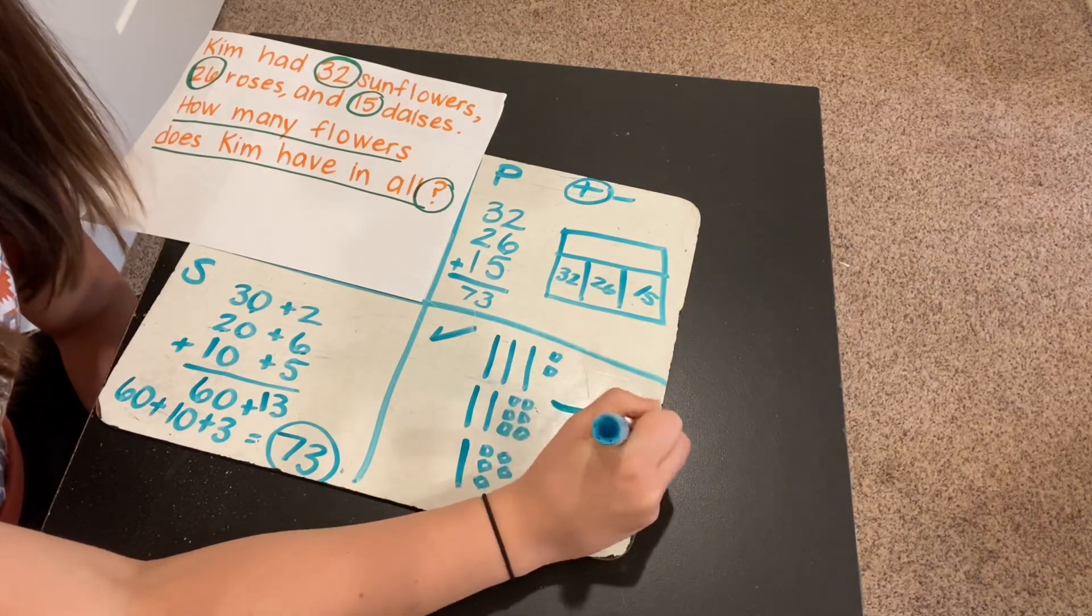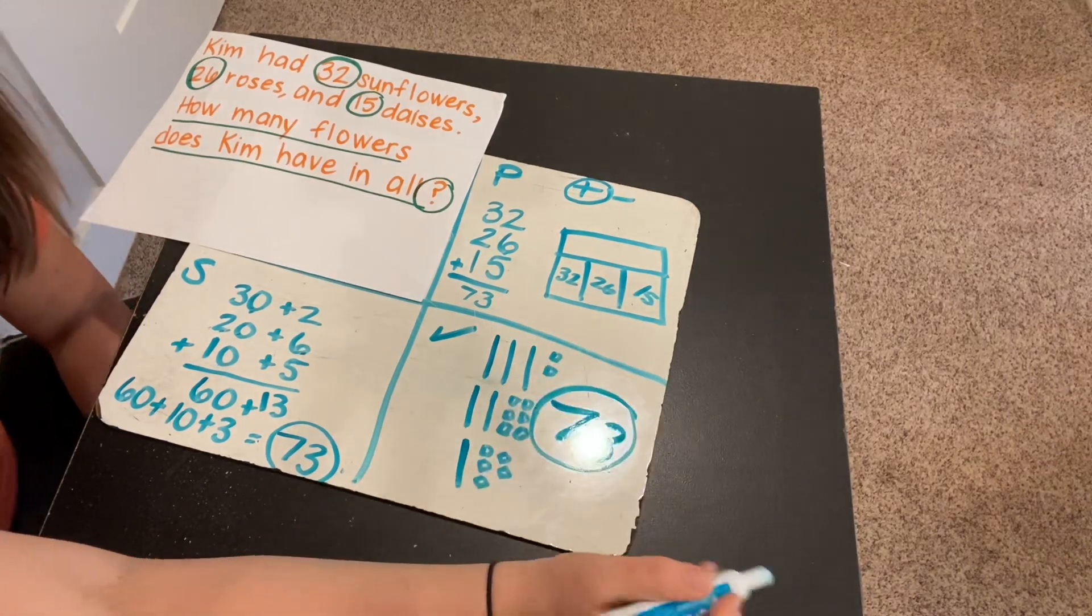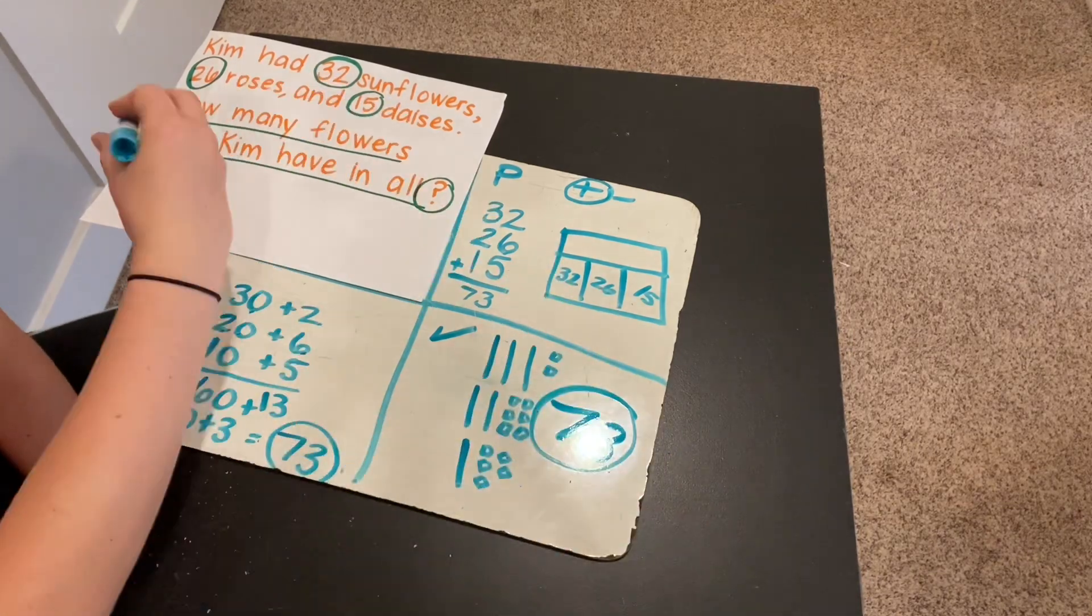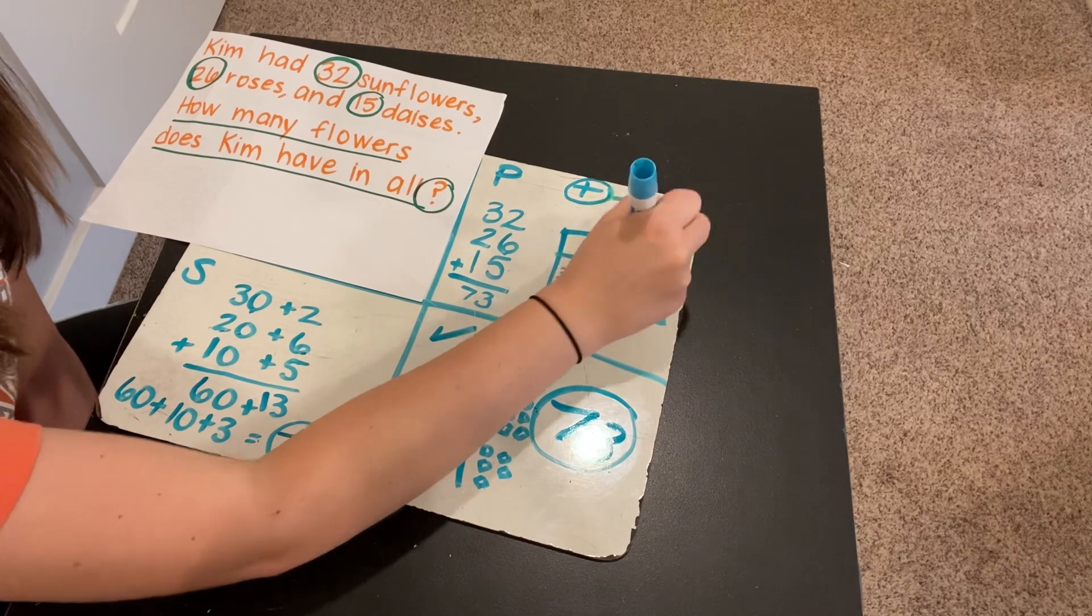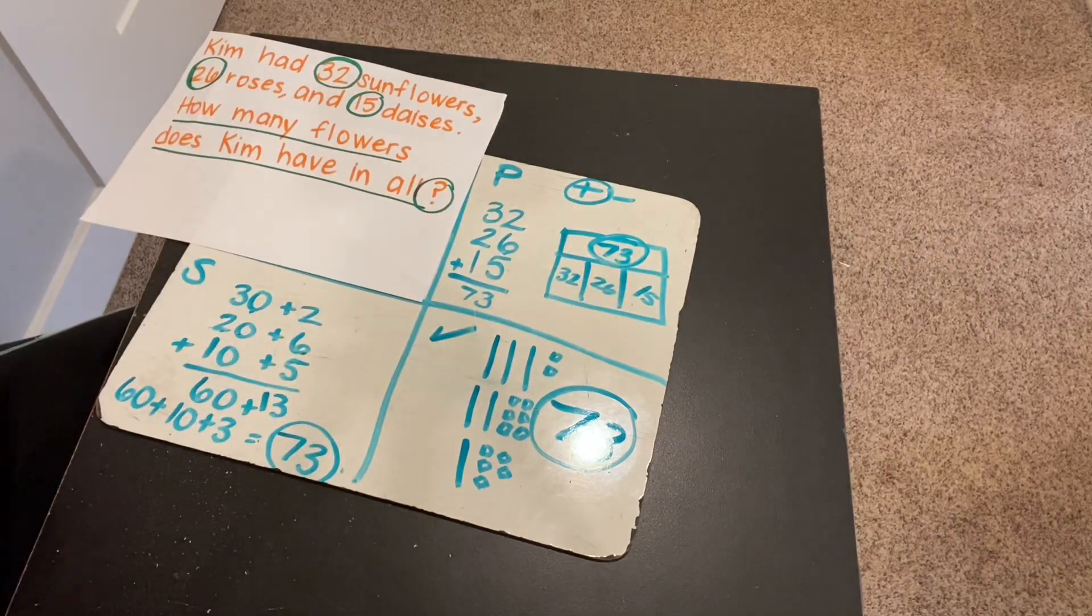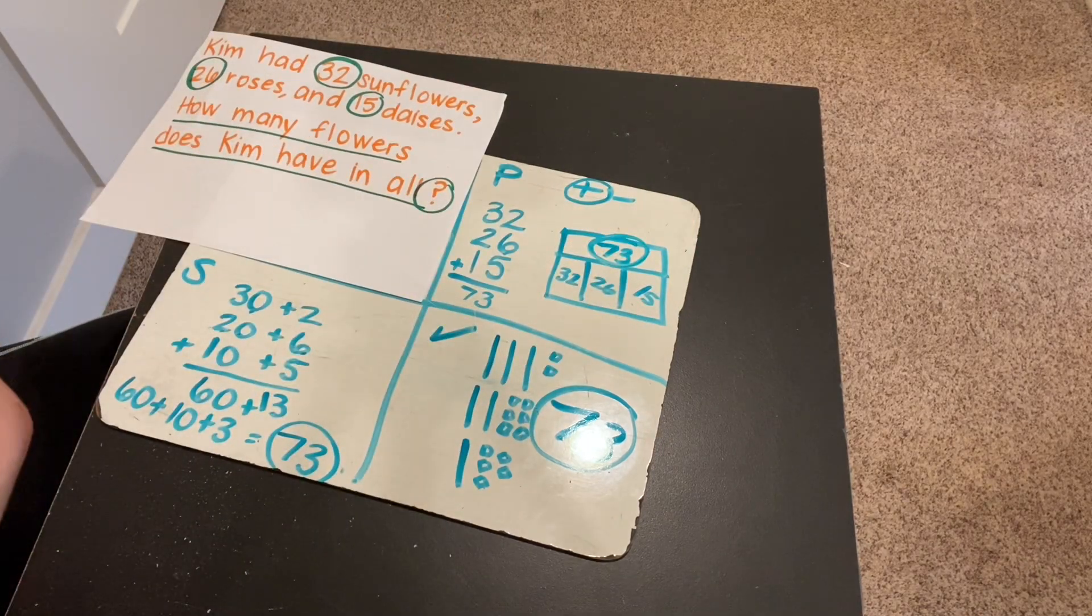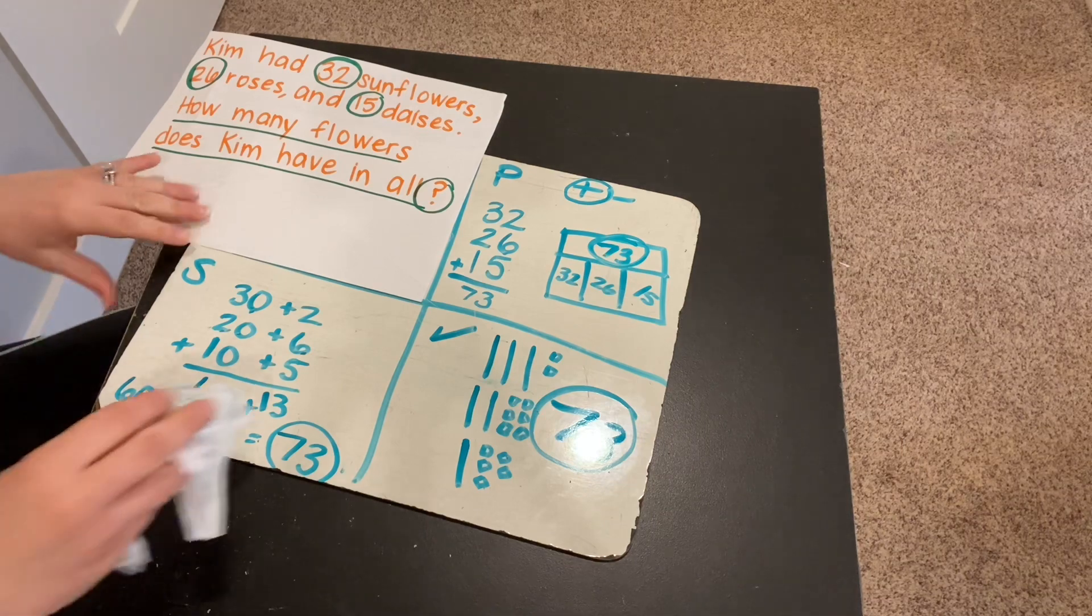So I checked my answer and I got 73 again. So I know for sure how many flowers does Kim have in all? She has 73 total. All right, let's move on to our 2D shapes.